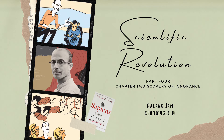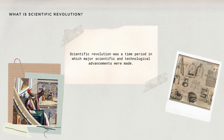To begin with, what do we mean by scientific revolution? Scientific revolution was a time period in which major scientific and technological advancements were made. It was a series of events that marked the emergence of modern science during the early modern period. In very generic terms, scientific revolution refers to the resurrection of modern-day science. Modern science is more dynamic, systematic, malleable, and inquisitive compared to old or pre-modern science.